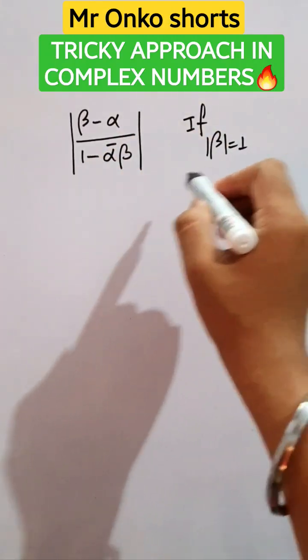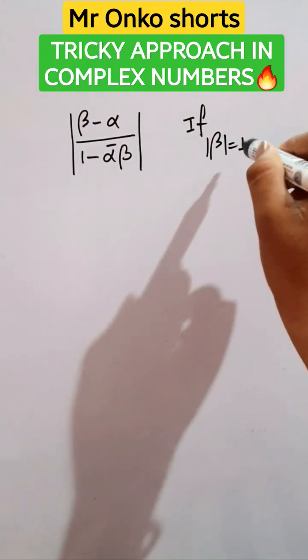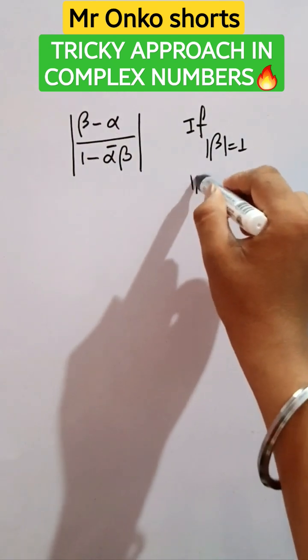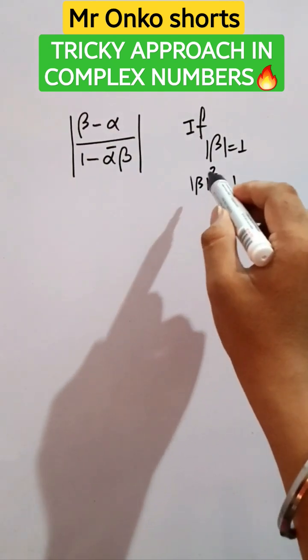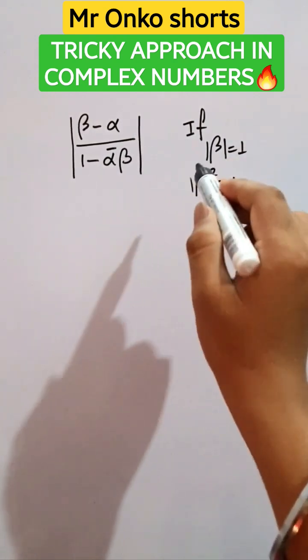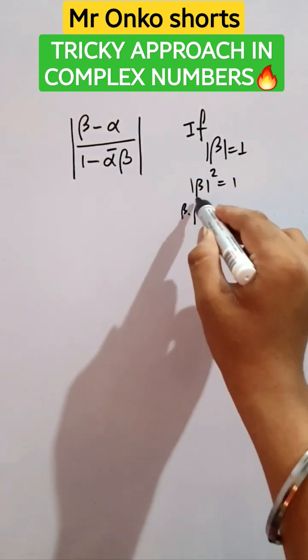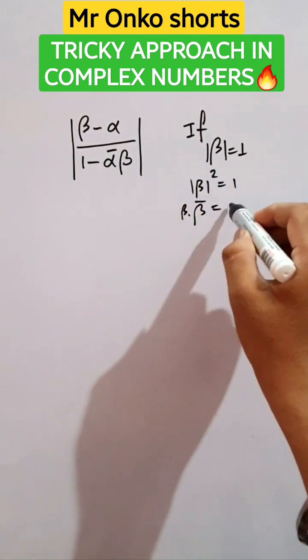We discuss this complex number problem. So we are given that beta modulus equals one. So we will take the square of this, which equals one. We know that beta mod beta square, if beta and alpha are all complex numbers, then beta into beta dash equals mod beta square, that is equals to one.